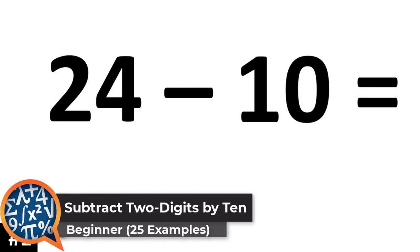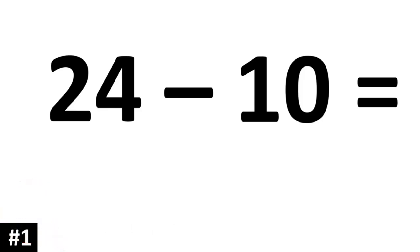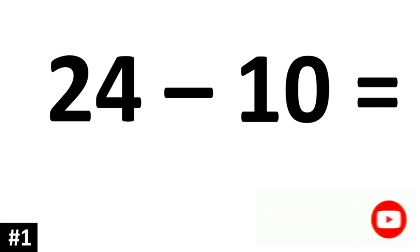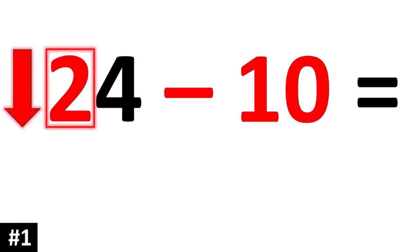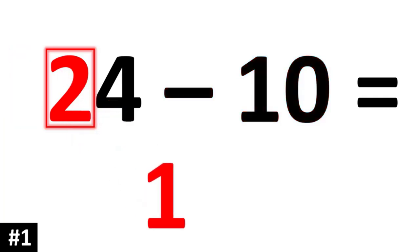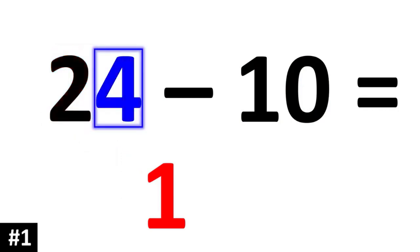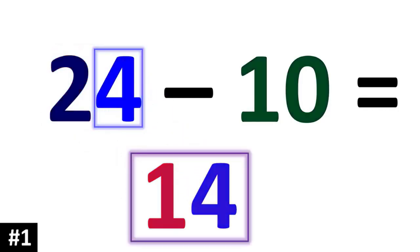In this video, we're going to take a look at how to subtract any 2-digit number by 10 and how to do so mentally, so when you see a problem such as this, you can solve it in 1 second or less. So let's take a look at our first example: 24 minus 10. The key is to first focus on the tens digit. The tens digit of 24 is 2, and if we subtract by 10, that 2 is going to go down to 1. The ones digit stays the same, so 24 minus 10 is 14.